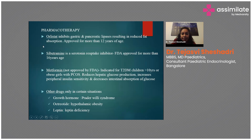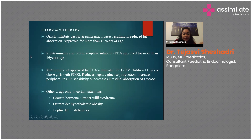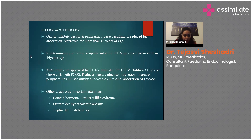Metformin works by reducing hepatic glucose production, increasing peripheral insulin sensitivity, and decreasing intestinal glucose absorption. For pathological causes: hypothyroidism is treated with thyroxine supplementation; growth hormone deficiency with daily growth hormone injections; Prader-Willi syndrome also benefits from growth hormone to improve body morphology; hypothalamic obesity can be treated with octreotide; and leptin deficiency is treated with leptin supplementation.